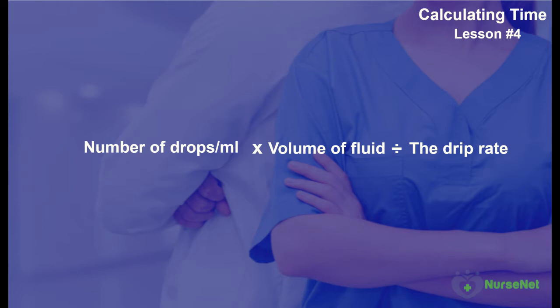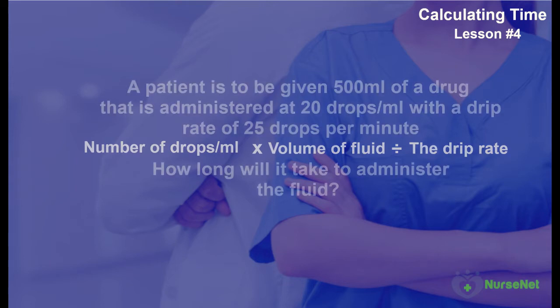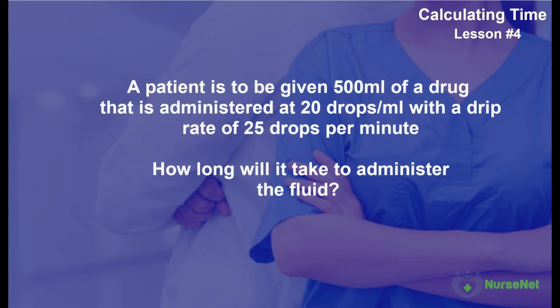Putting this into context, let's do an example. A patient is to be given 500 milliliters of a drug that is administered at 20 drops per milliliter, with a drip rate of 25 drips per minute. How long will it take to administer the fluid?